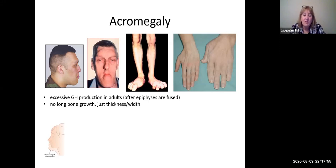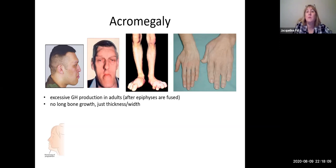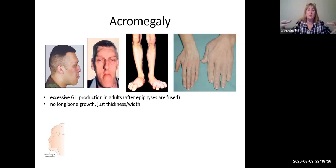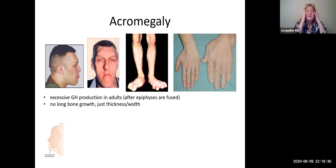If you get excess growth hormone from a pituitary tumor after you are done with your growth, you would not have long bone growth or gigantism — the disease you would have is called acromegaly. You still get excessive bone growth, but because we don't have epiphyseal plates, we can't get length, so we get width and thickness throughout the body. Students often think this only happens in the hands and feet because of pictures, but those are just where the bones are closest to the surface, so you're more likely to notice it there. An extra quarter to half inch of bone growth in the face would deform it noticeably, but in the thigh you might just think your pants shrunk.